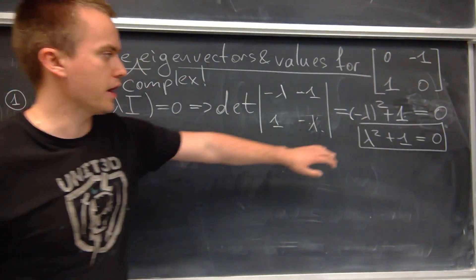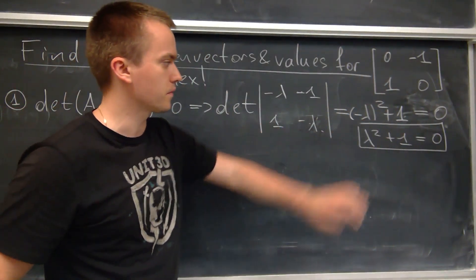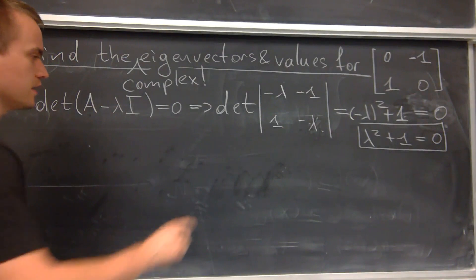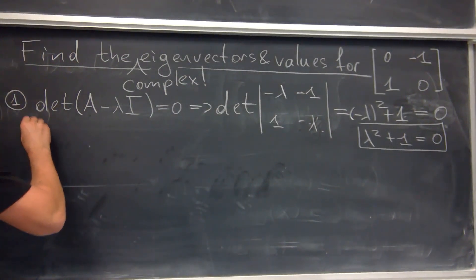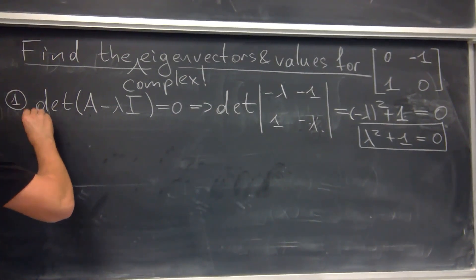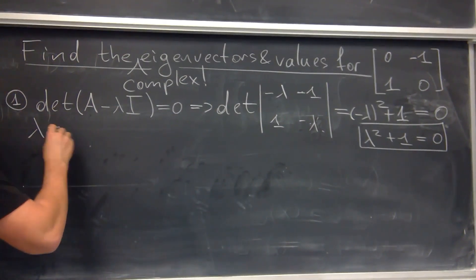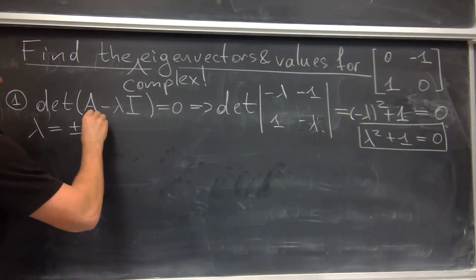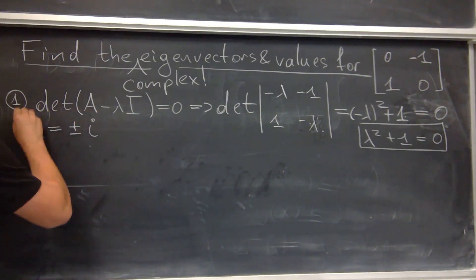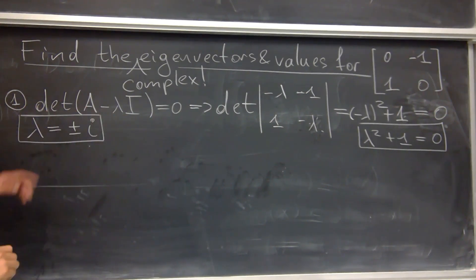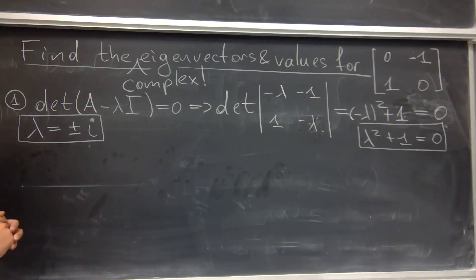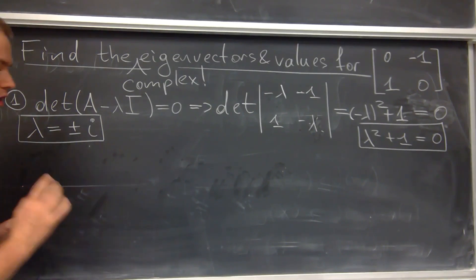So I have this quadratic equation: lambda squared plus 1 equals zero. The roots of this quadratic equation are going to be plus or minus i. So my eigenvalues for this matrix are plus or minus i. And with step 1 we are done.